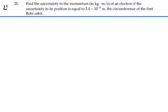Here's problem 4025. Find the uncertainty in the momentum in kilogram meters per second of an electron if the uncertainty in its position is equal to 3.4 times 10 to the minus 10 meters, the circumference of the first Bohr orbit.